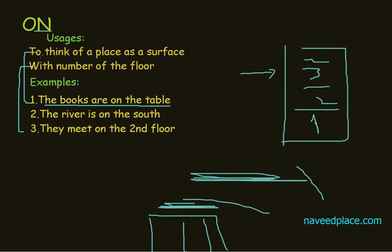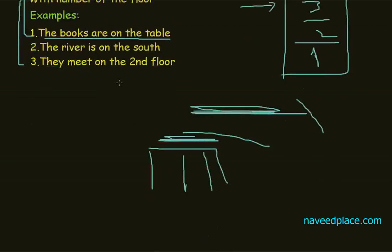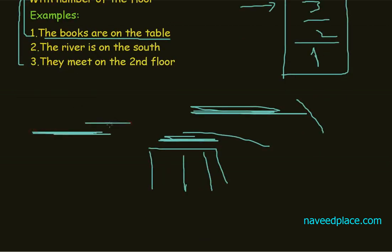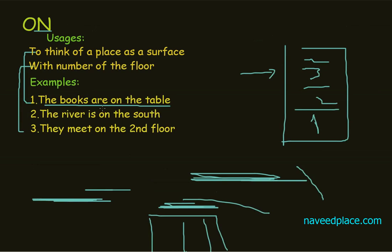So the first usage is to think of a place as a surface — whenever we think any place is a surface, we use ON — and the second is with the number of the floor. So this was a lecture on ON. I hope you have understood. For more videos, lectures and exercises, come to my website www.NabeerPlace.com.